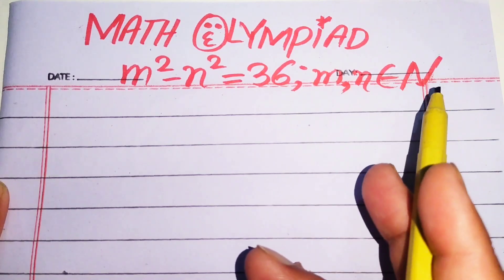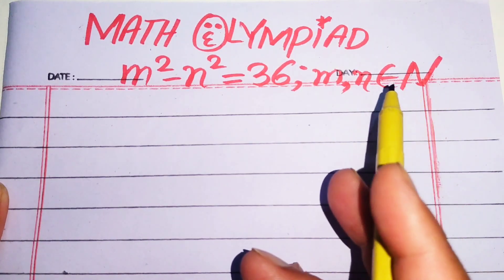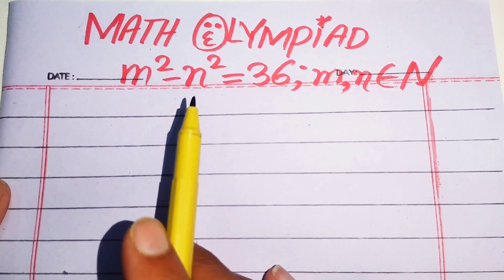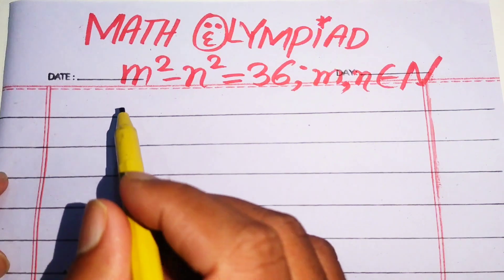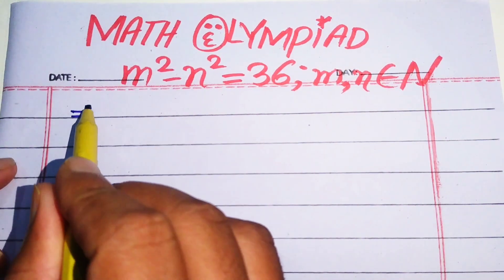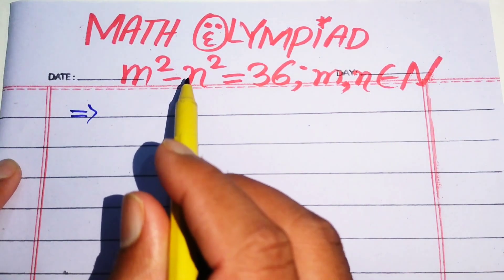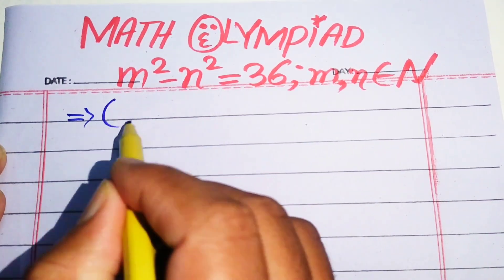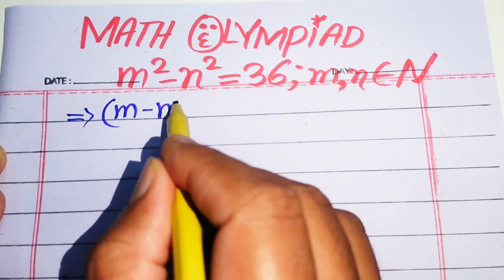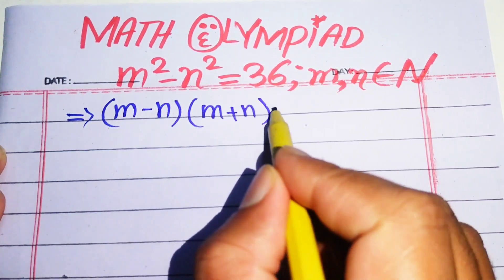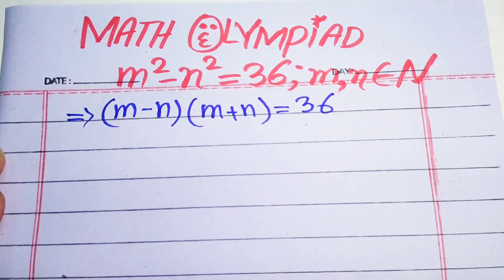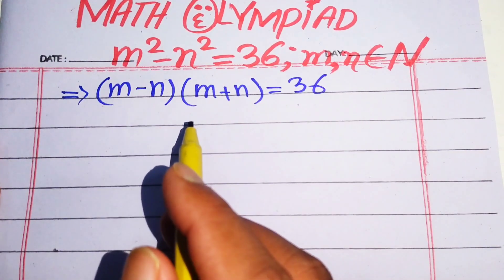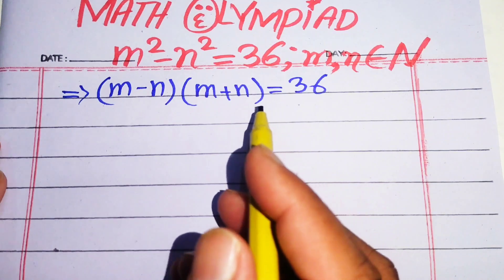Here, this capital N denotes the natural numbers. We solve this problem for the values of natural numbers. The very first step is to apply the well-known identity: m squared minus n squared equals (m minus n)(m plus n) equals 36. On the left-hand side we have two factors multiplied together, while on the right-hand side we have only one factor.